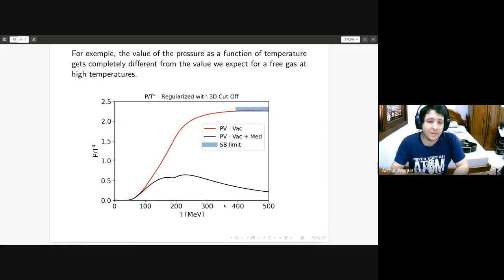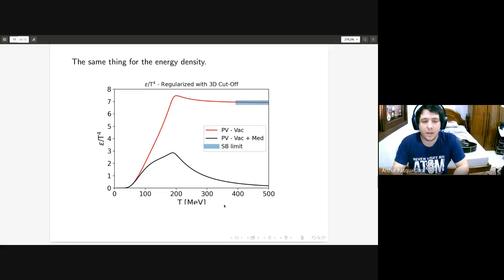If we see, for example, applying the sharp cutoff in the vacuum and in the vacuum and medium, we can see that the pressure divided by the temperature to the fourth power does not converge to the value we expect for a free gas. The red line is when you apply only to the vacuum, and the black line is when you apply to the vacuum and the medium. The SB limit or Stefan-Boltzmann limit represents the limit of a free gas.